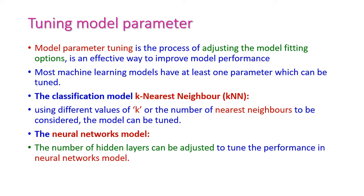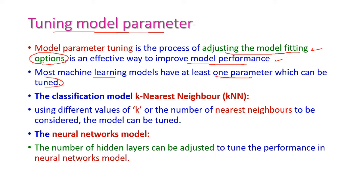For improving the performance of a model, the first method is tuning model parameters. Tuning model parameters means adjusting the model fitting options. This is one of the most effective ways to improve performance. Most machine learning algorithms have at least one parameter that can be tuned — we identify that parameter, adjust its value, and the performance will get improved.